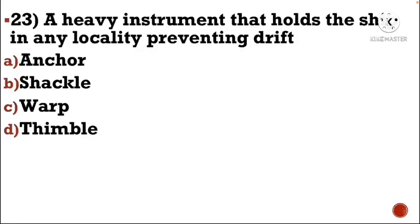Next question: A heavy instrument that holds the ship in any locality preventing drift — Option A: anchor, Option B: shackle, Option C: wire, Option D: thimble. The correct answer is Option A, anchor.